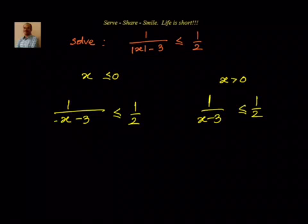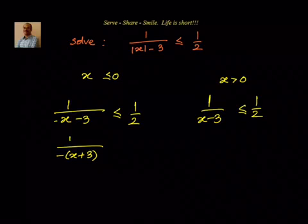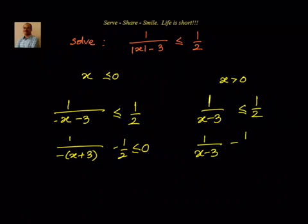We simplify each case by moving terms to one side. For x less than 0: 1 divided by (minus x plus 3) minus 1/2 is less than or equal to 0. For x greater than 0: 1 divided by (x minus 3) minus 1/2 is less than or equal to 0.